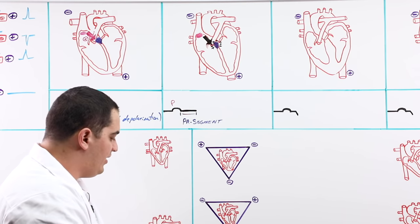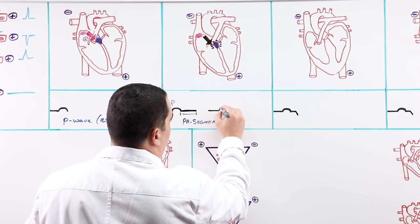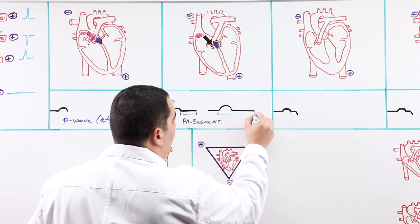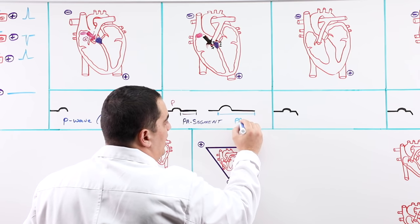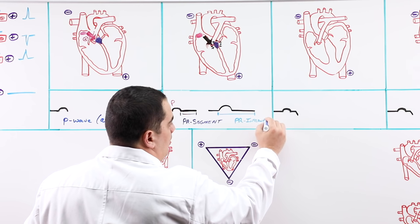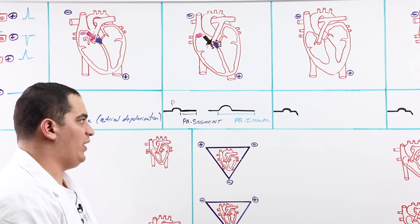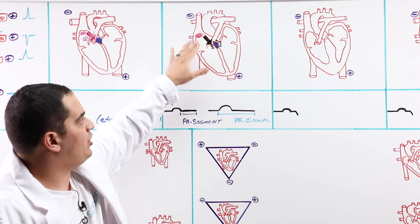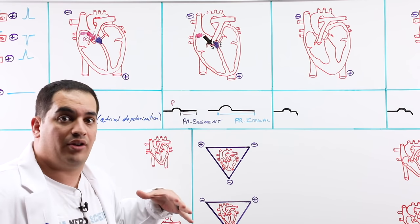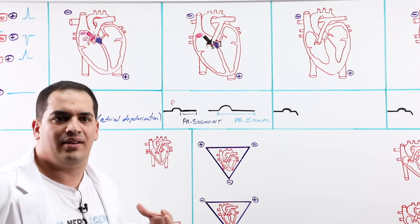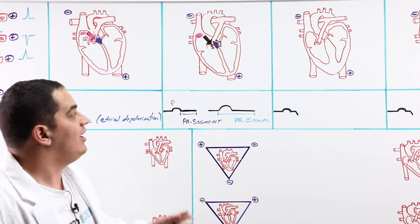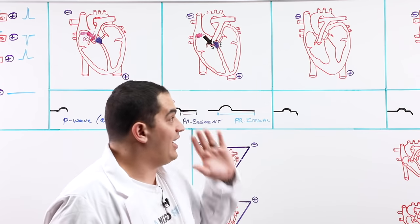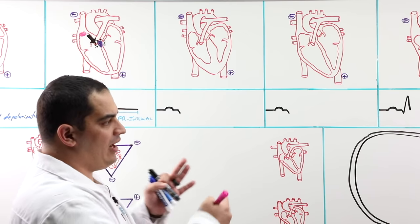It's important to differentiate the PR segment from the PR interval. The PR interval spans from the beginning of the P wave all the way to where the PR segment ends — it includes both the P wave and the PR segment together. The PR segment alone represents the AV node delay, where electrical charges are held before being conducted down the bundle of His and bundle branch system.